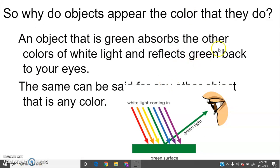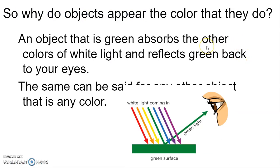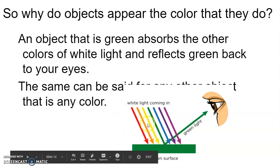Why is something green? Why is something red? It all depends on what is reflected back to you. If white light shines on something that's green, it reflects only green back to you and absorbs the rest — that's why it appears green. If instead you shine only blue light on a green surface, you wouldn't get any light reflected back, so the object would appear black.